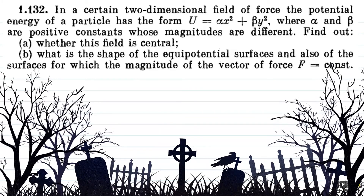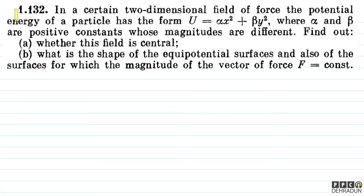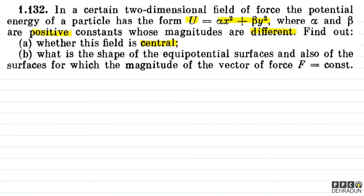The question says: in a certain two-dimensional field of force, the potential energy of a particle has the form u = αx² + βy², where α and β are positive constants whose magnitudes are different. Find out — there are two parts — whether this field is central, and what is the shape of the equipotential surfaces and also of the surfaces for which the magnitude of the force vector f is equal to constant.